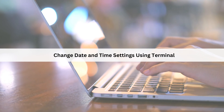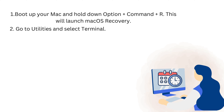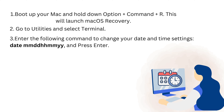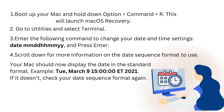To fix this, change your date and time settings using Terminal. First, boot up your Mac and hold down Option, Command, and R. This will launch macOS Recovery. Go to Utilities and select Terminal. Enter the following command to change your date and time settings: date MMDDHHMMYY, and press Enter. Your Mac should now display the date in your standard format.